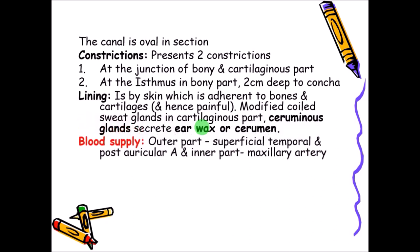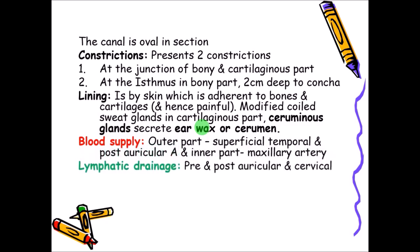The blood supply of the external acoustic meatus: the outer part is supplied by the superficial temporal artery and the posterior auricular artery — the same arteries supplying the pinna. The inner part is supplied by the maxillary artery. Lymphatic drainage is to the pre- and post-auricular as well as the cervical group of lymph nodes, just like the pinna.